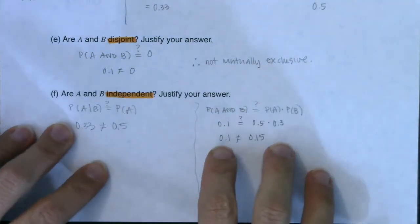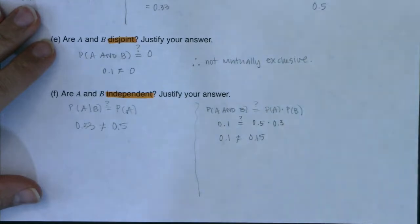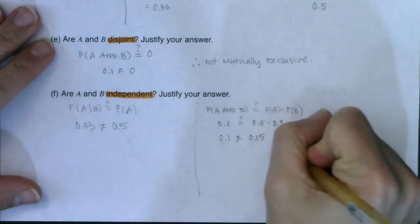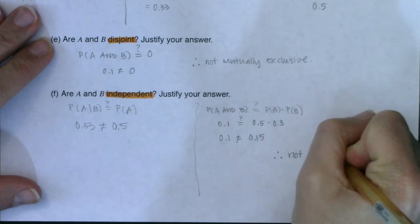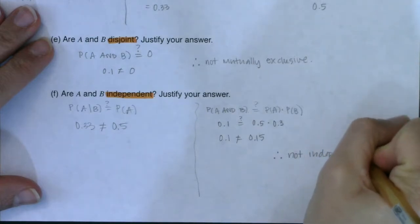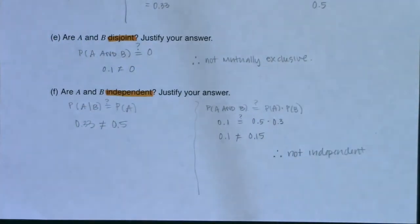So I'm going to do 0.5 times 0.3, and I am looking at 0.15. So is 0.1 equal to 0.15? We know it's not. All right. So both of these equations are leading us to conclude that these events are not independent.